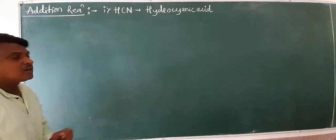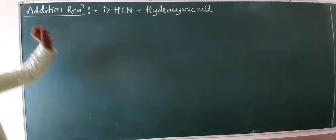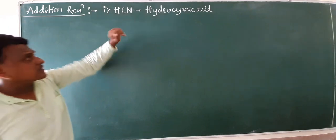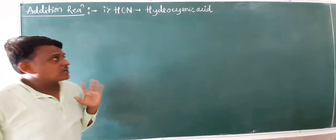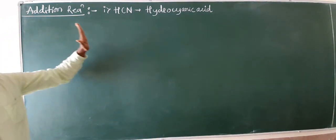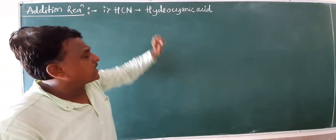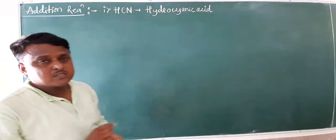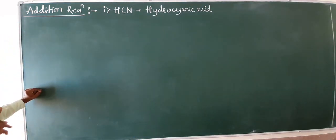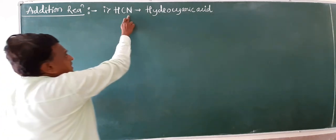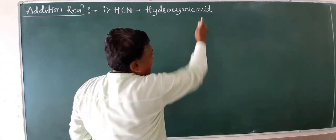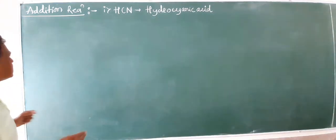Hello everyone. Now we have a very important reaction of this chapter: addition reactions of either aldehyde or ketone. What happens when aldehyde and ketones react with hydrocyanic acid? HCN means hydrogen cyanide, or hydrocyanic acid.